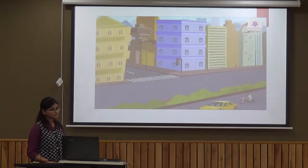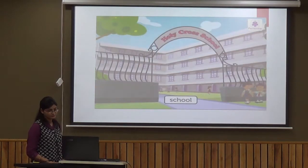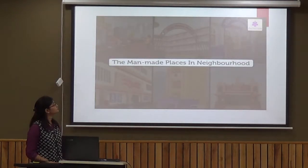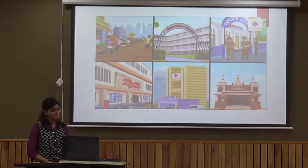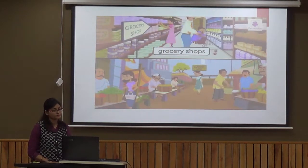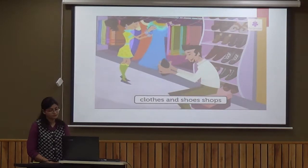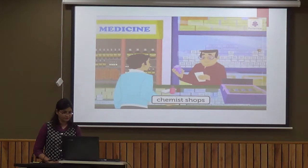In the neighborhood, we also have man-made features like markets, schools and parks built by man. Every neighborhood provides us with what we need to be happy and healthy. Different places provide different services. We have grocery shops and markets with all different items of food; other shops sell cloth, shoes, etc. We have chemist shops that sell medicines.